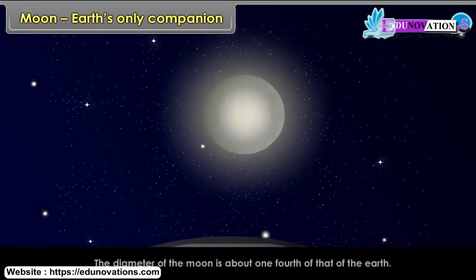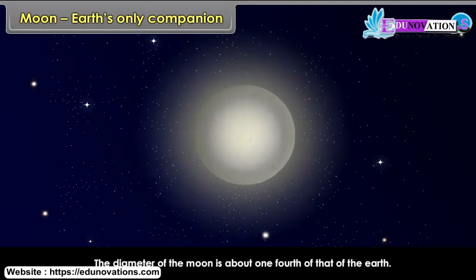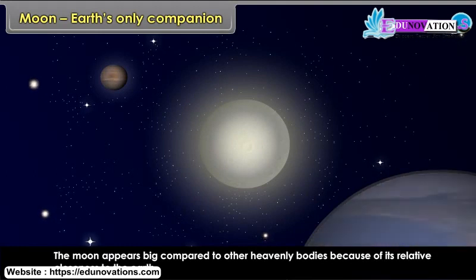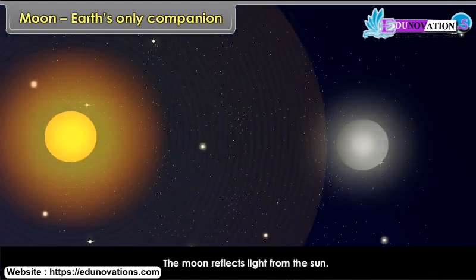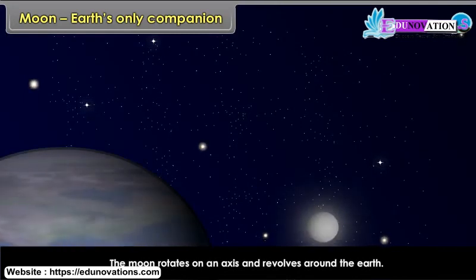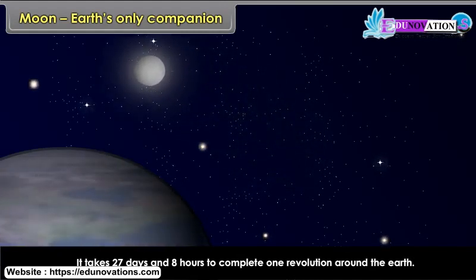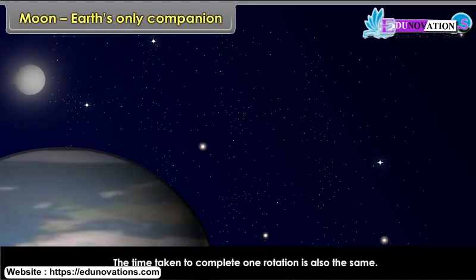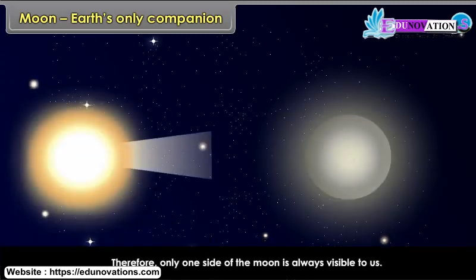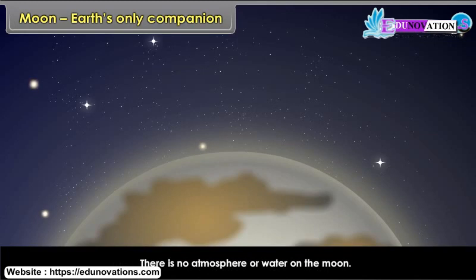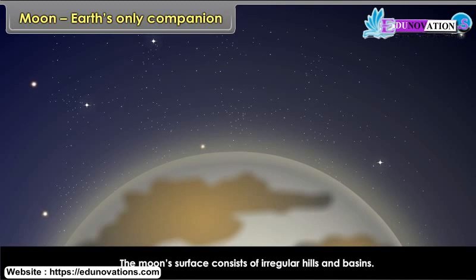The Moon is the only satellite of the Earth. The diameter of the Moon is about one-fourth of that of the Earth. The Moon appears big compared to other heavenly bodies because of its relative closeness to the Earth. The Moon reflects light from the Sun. It rotates on an axis and revolves around the Earth, taking 27 days and 8 hours to complete one revolution. The time taken to complete one rotation is also the same, so only one side of the Moon is always visible to us. There is no atmosphere or water on the Moon, and its surface consists of irregular hills and basins with no soil.